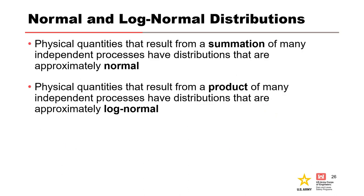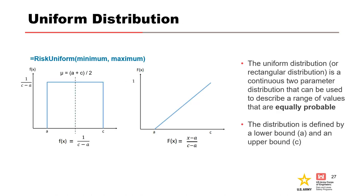Physical quantities that result from a summation of many independent processes have distributions that are approximately normal. Physical quantities that result from a product of many independent processes have distributions that are approximately log normal. The uniform distribution is a bounded distribution defined by an upper and lower bound, where each value within that range is equally probable. This is a good distribution to use when you have a good idea of the possible range but are uncertain about where within that range a value is most likely to fall. The mean is simply the average of the upper and lower bounds.